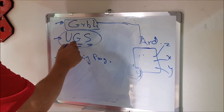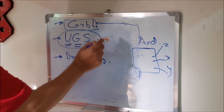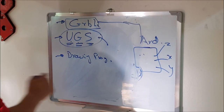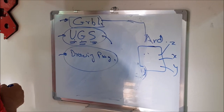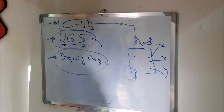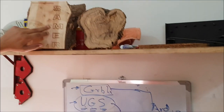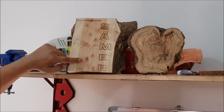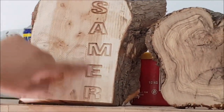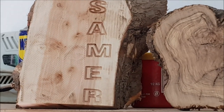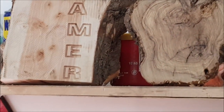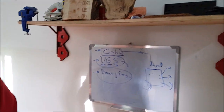Samer will also show where to find Universal G-code Sender, what version to use, and how to install it on your computer, as well as the drawing programs used to make this project. He did this project and will show you in detail, including a face engraving and some name engraving work. See you later, thank you.